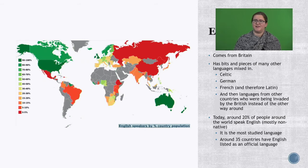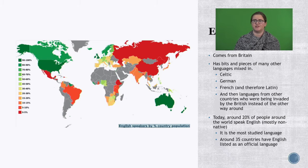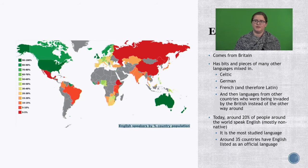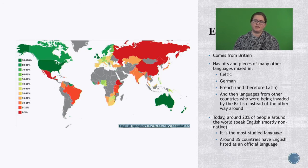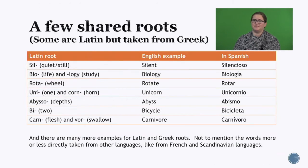English comes from Britain or England, and it has so many other languages mixed in: Celtic, German, French — and French comes with Latin, so Latin is in English too — as well as languages from the countries being invaded by the British. Today, around 20% of people around the world speak English, though that's mostly non-native populations, so people not in the US or Britain. It is the most studied language, and around 35 countries have English listed as an official language. History lesson over.